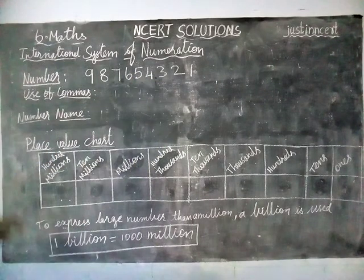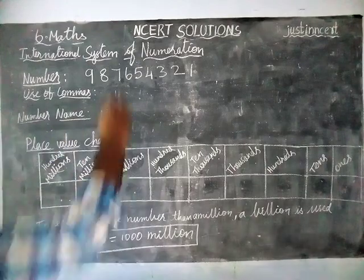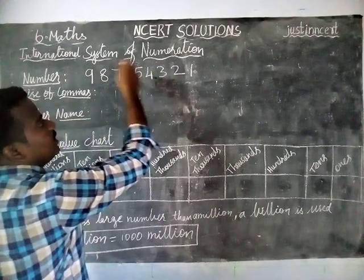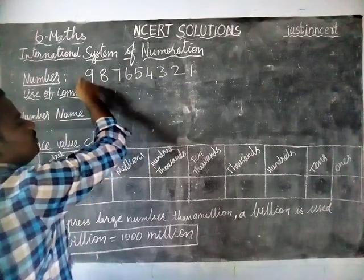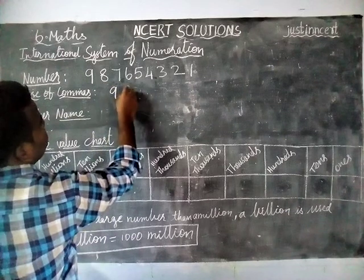But in the International System of Numeration, we take from the right-hand side onwards, and each and every three digits we place one comma. So now we will check it.